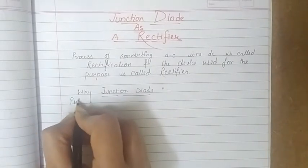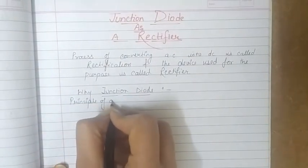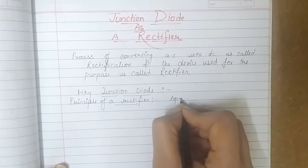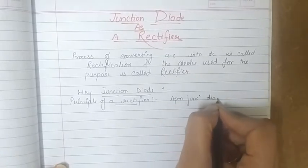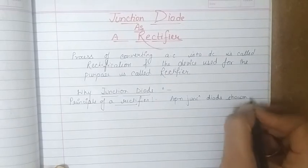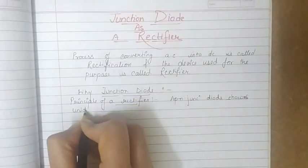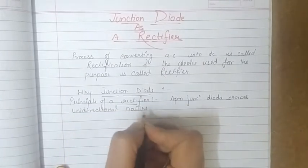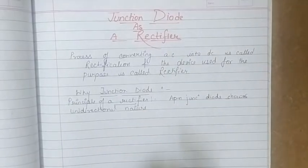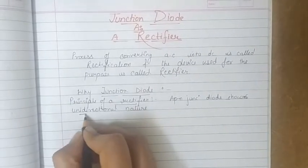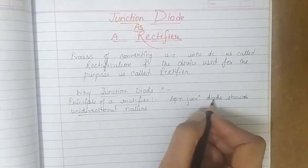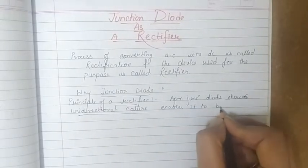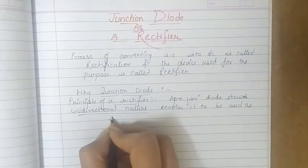This is also called the principle of a rectifier. A PN junction diode shows unidirectional nature. By unidirectional, we mean it conducts in forward bias and it won't conduct in reverse bias.